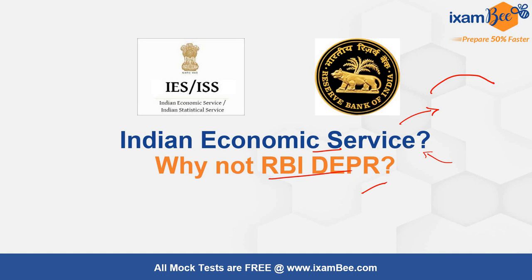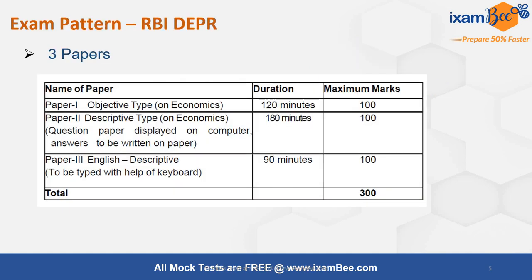The RBI DEPR examination has three papers. The first paper is objective type on economics, where you are given approximately 62 questions and two hours to attempt them. There are one-marker, two-marker, three-marker, and four-marker questions, and the maximum marks for this paper is 100.